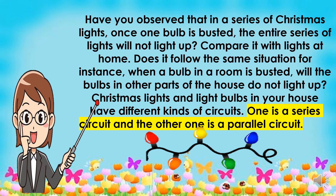Have you observed that in a series of Christmas lights, once one bulb is busted, the entire series of lights will not light up? Compare it with lights at home. Does it follow the same situation? For instance, when a bulb in a room is busted, will the bulbs in other parts of the house not light up? Christmas lights and light bulbs in your house have different kinds of circuits — one is a series circuit and the other one is a parallel circuit.